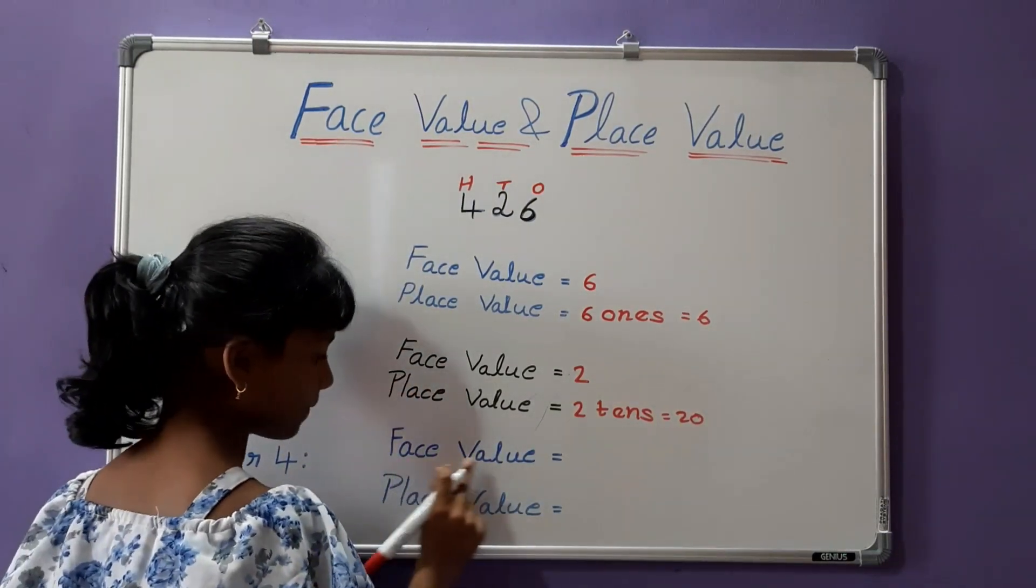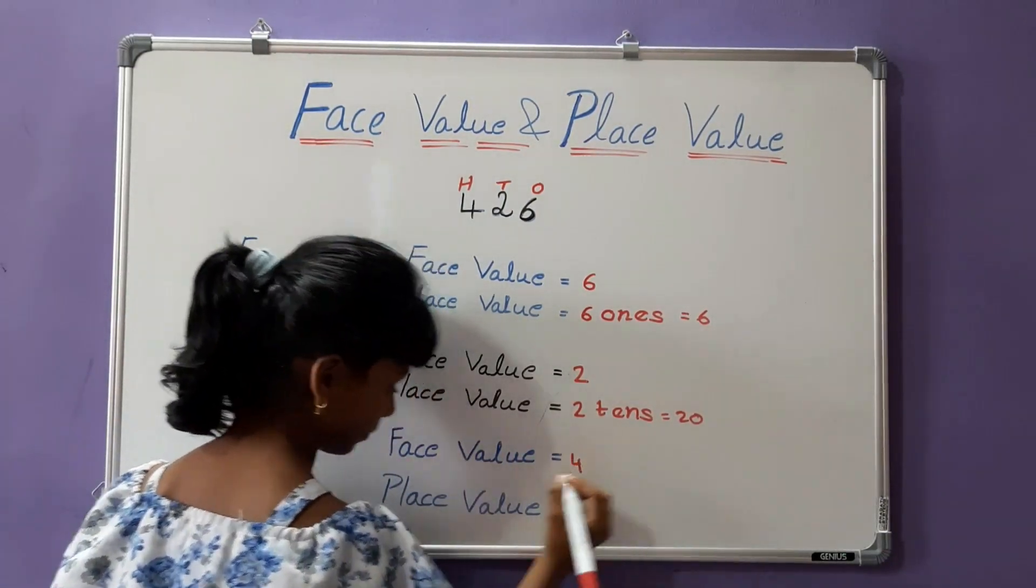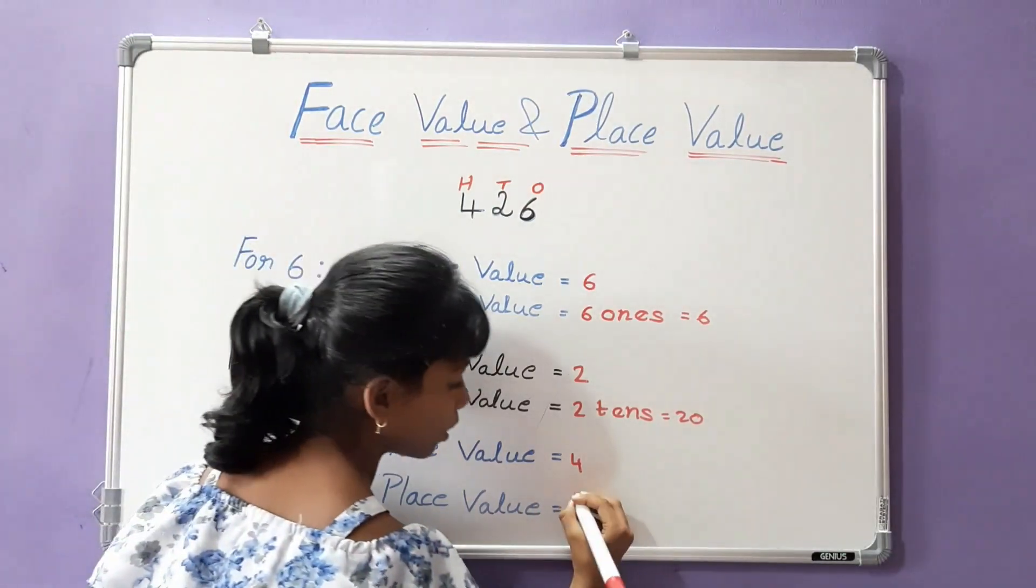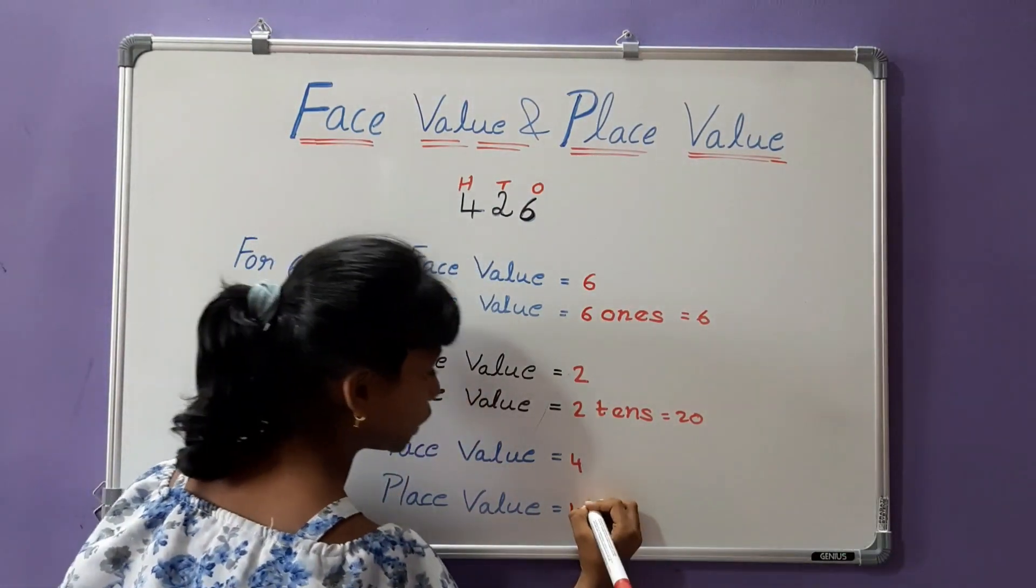For 4, face value is 4. Place value is 4 hundreds is equal to 400.